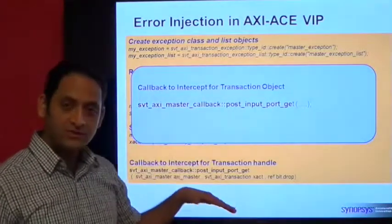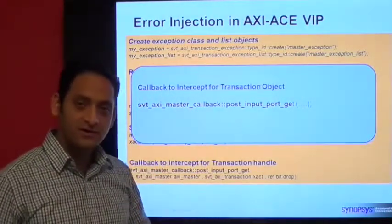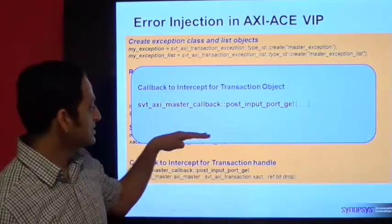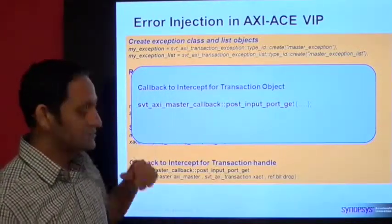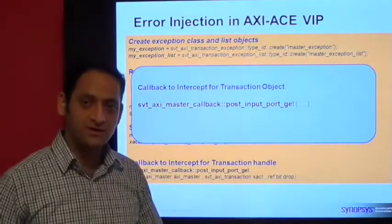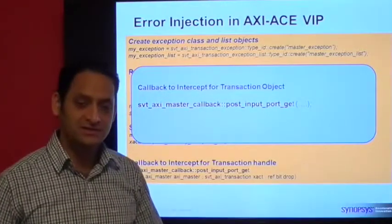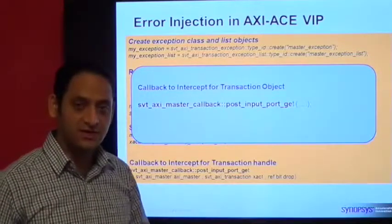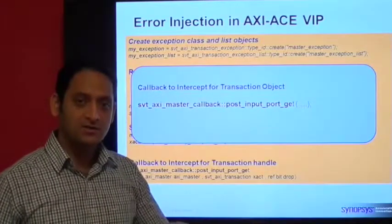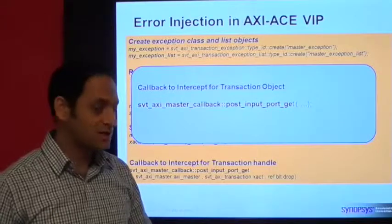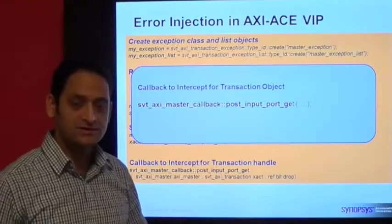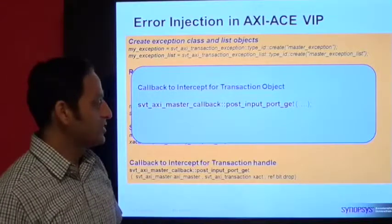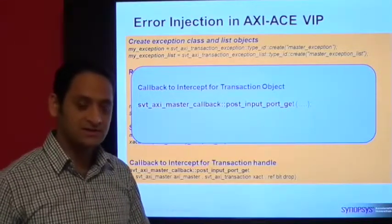Now the place where you need to do all of this, and where to get the handle of the transaction object, is the callback from the VIP master. This is where you need to intercept the transaction object and set the exception list for it. All the steps shown before, all the code, can reside in this callback function itself.